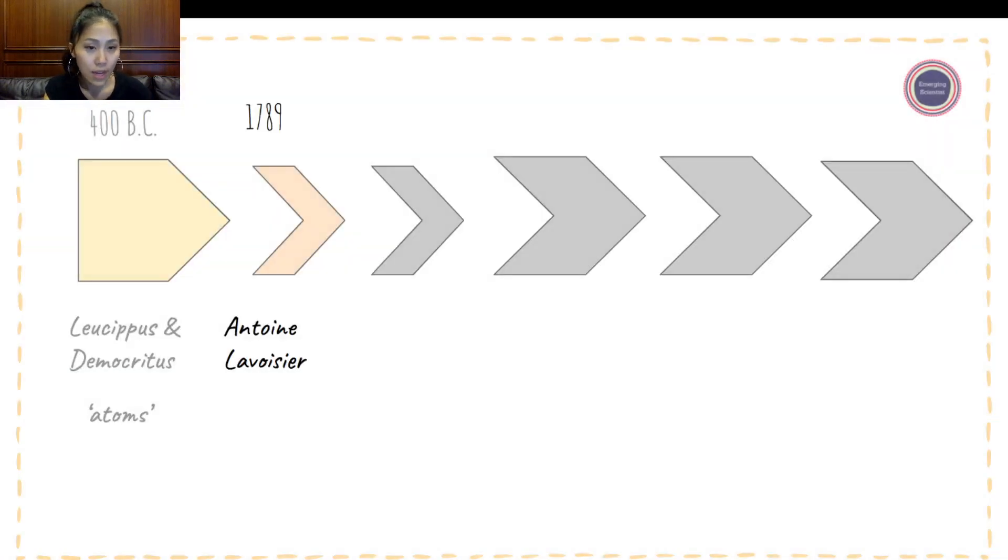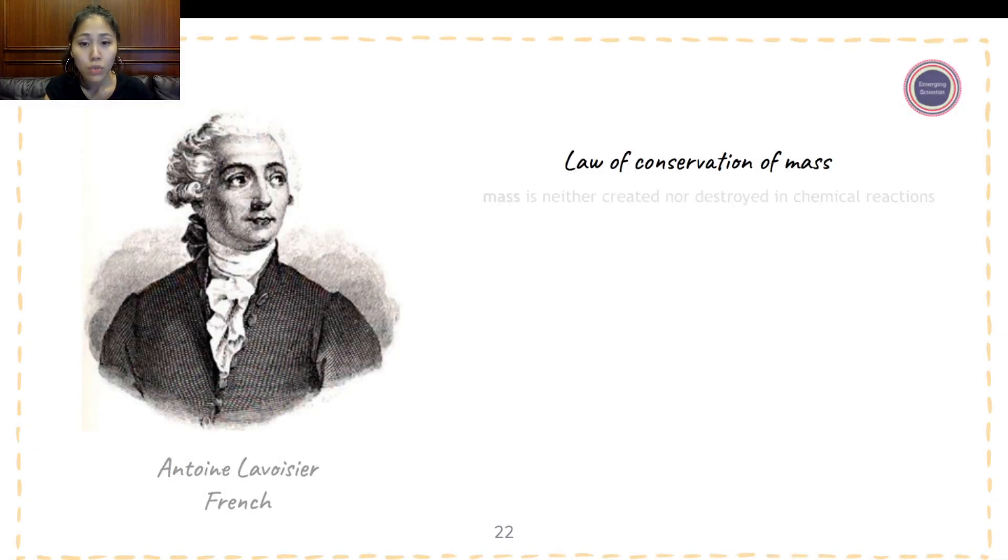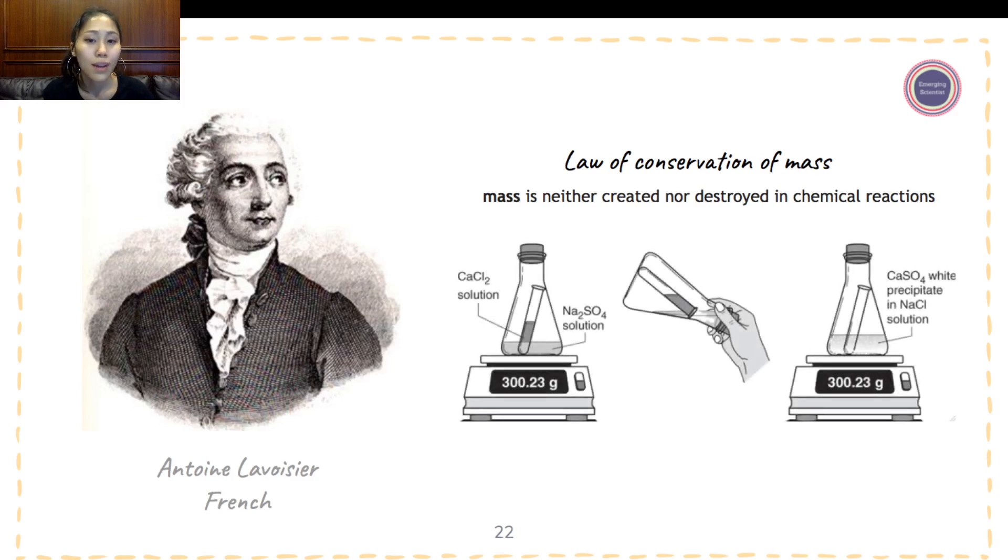In 1789, Antoine Lavoisier came up with the law of conservation of mass. So what does that mean? It means that mass is neither created nor destroyed in a chemical reaction. Here's an example of a calcium chloride solution, and that calcium chloride solution is placed inside the test tube. We see sodium sulfate solution, and that solution is placed inside the conical flask, outside of that test tube.